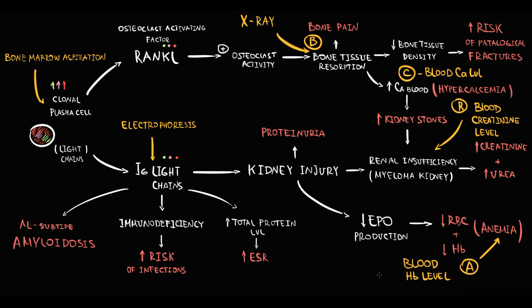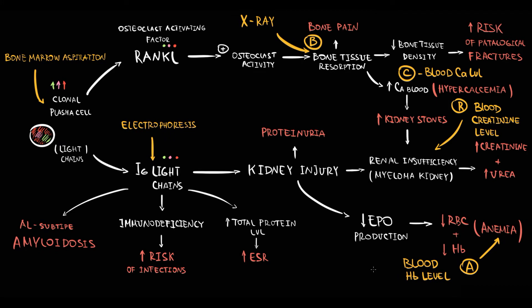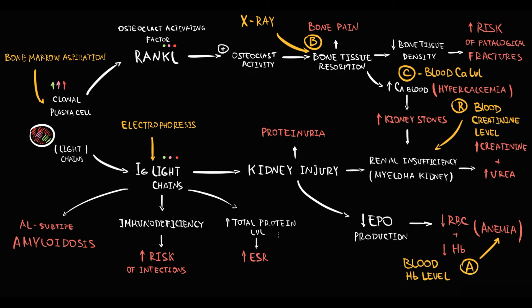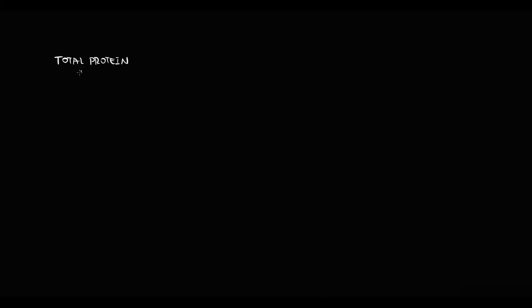There are a couple of additional things we can measure. First, hyperproduction of clonal immunoglobulins causes an increase in total protein count, which can really help in diagnosis. In normal conditions, when you see a total protein count of 80 and albumin level of 50, the amount of all other proteins including gamma globulins is 30.